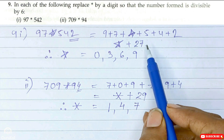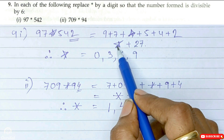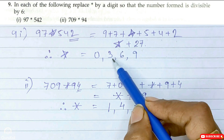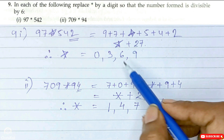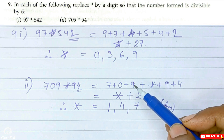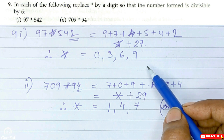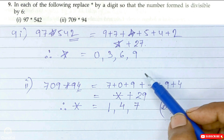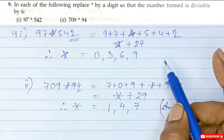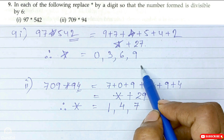So we have star plus 27. Now 27 is divisible by 3. So 27 plus 0 gives 27 — divisible by 3, so star can be 0. Next, 27 plus 3 gives 30 — divisible by 3, so star can be 3. We check 2: 2 plus 27 is 29, which is not divisible by 3, so 2 is not valid. Then 6: 6 plus 27 is 33 — divisible by 3. And 9: 9 plus 27 is 36 — divisible by 3. We stop here since the next number would be double-digit. The final answer for star is 0, 3, 6, and 9.